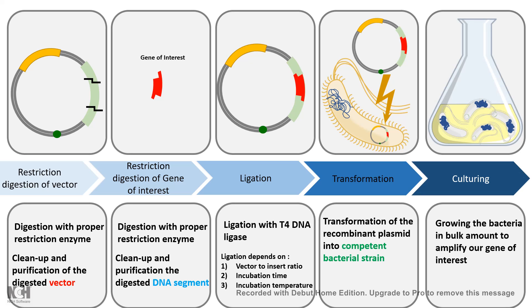Then you can transform it into E. coli and grow the E. coli in bulk. As the E. coli grows, your gene of interest also amplifies.